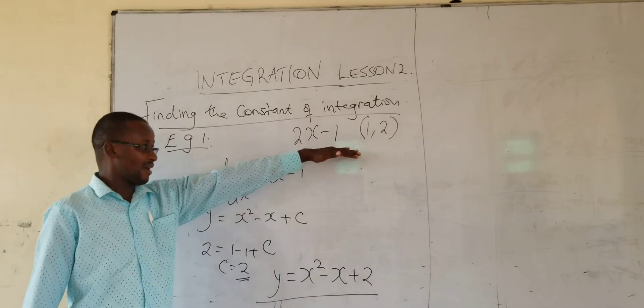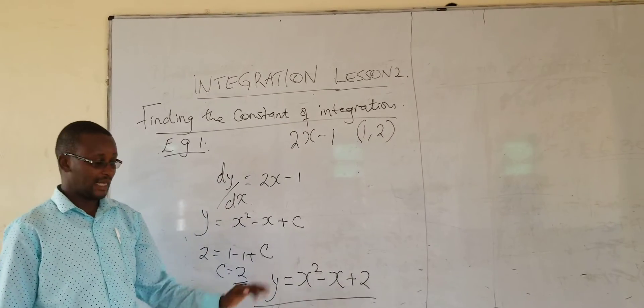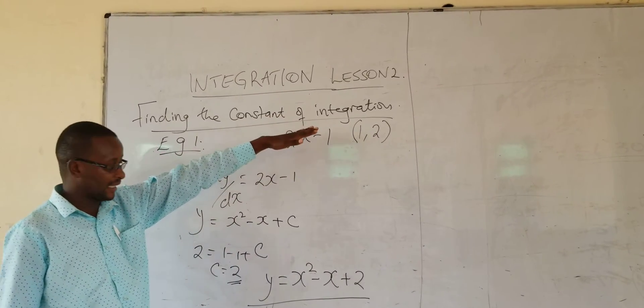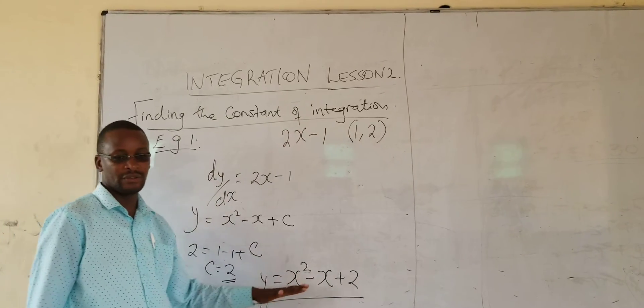Now you can see the equation is now complete because we know the constant is 2. So the moment you are given more information, you can be able to get that constant of integration and complete the equation of the curve.